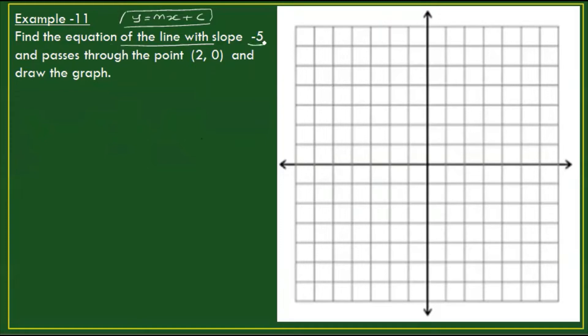The slope m is minus 5, and the line passes through a point.